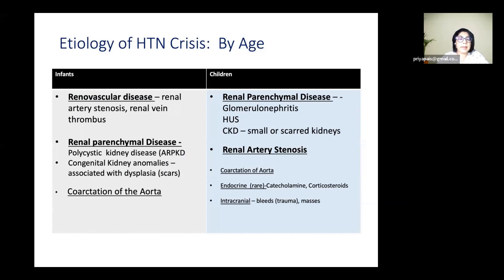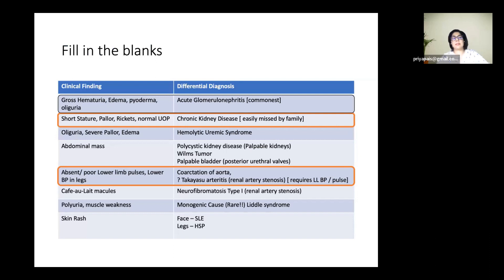Causes of hypertensive crises differ by age. In infants, coarctation of the aorta must be kept in mind alongside renal vascular disease — renal artery or vein thrombosis being the most common — followed by renal parenchymal disease such as autosomal recessive polycystic kidney disease or dysplastic kidneys. In older children, similar to adults, causes include glomerulonephritis, hemolytic uremic syndrome, CKD with small or scarred kidneys, and renal artery stenosis. Less common are coarctation, endocrine causes such as pheochromocytoma, and intracranial bleeds or trauma.